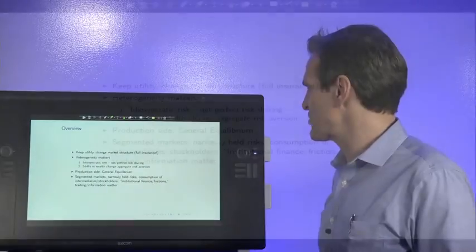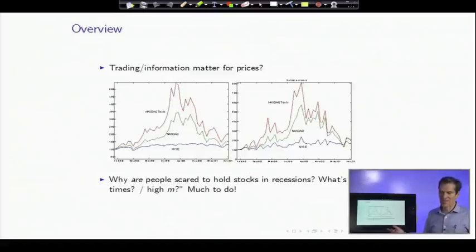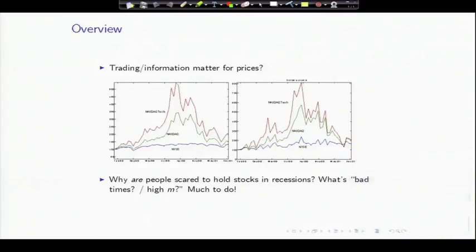And I'll close with trading and information. It is amazing. All the models you've seen so far make the prediction that trading is zero or trading is irrelevant. And yet the markets that we see have an enormous amount of trading. This is a final graph from an old paper and reproduced in discount rates. And what I'm showing you here is the prices in the NASDAQ Tech, NASDAQ and NYSE through the tech boom, along with the trading volume in NASDAQ Tech, NASDAQ and the NYSE. And you can see that high prices correspond to huge volumes of trading.